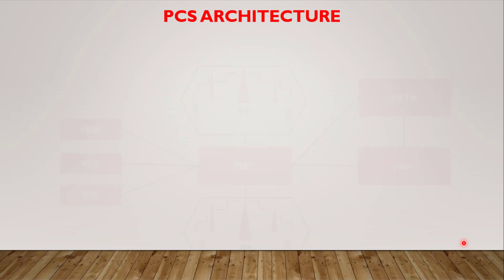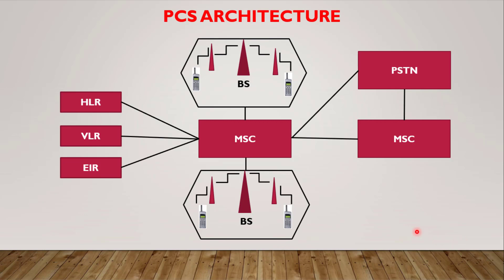Now, PCS architecture. Here you see a typical architecture for personal communication services. There are two regions as shown in this diagram, and in each region you can see there is a base station. Along with this base station, you have smaller antennas installed in the same region in order to give more coverage to this geographic area. This base station is connected to the MSC, and the MSC has records pertaining to customers and different hardware components in the network.